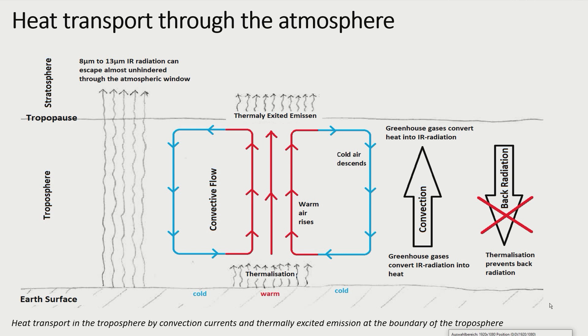Now we will see how the processes, discussed before influence the heat transport, from the Earth's surface through the atmosphere. By the range of 8 to 13 micrometers, infrared radiation, emitted by the Earth's surface, can escape almost unhindered through the so-called atmospheric windows.